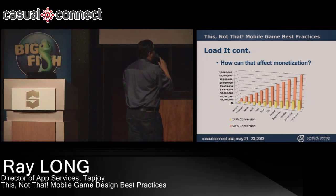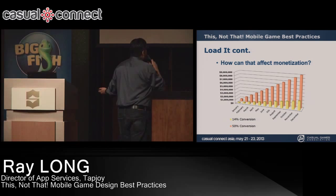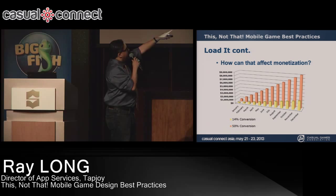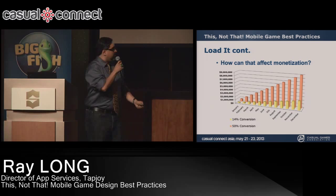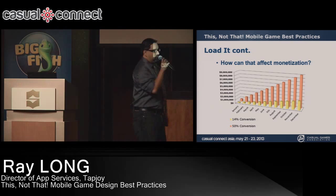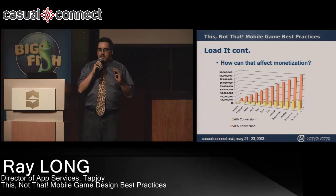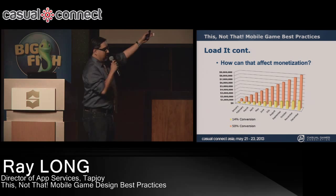How can that affect monetization? Let's say you had a $100,000-a-month advertising budget, a 10-cent bid, and got a million users a month, with a nickel profit per user on average. That's the difference between under $3 million and under $9 million in profit depending on your conversion rate. So if you're at 52 megs, get it under 50. If you're at 105, get it under 100. It's worth the engineering effort to hit those benchmarks — I'd rather make $9 million than $3 million.